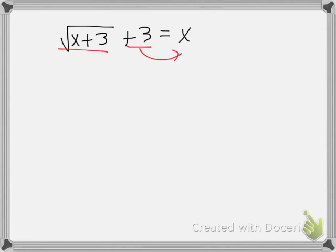So we need to move the plus 3 to the other side, and we're going to do this by subtraction. So my first step is to write the square root of x plus 3 equals x minus 3.